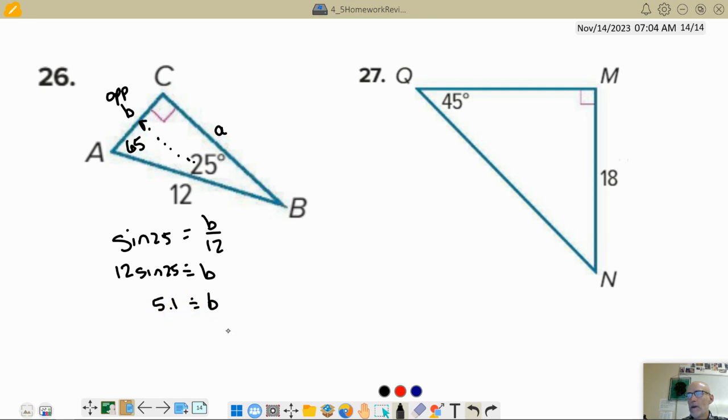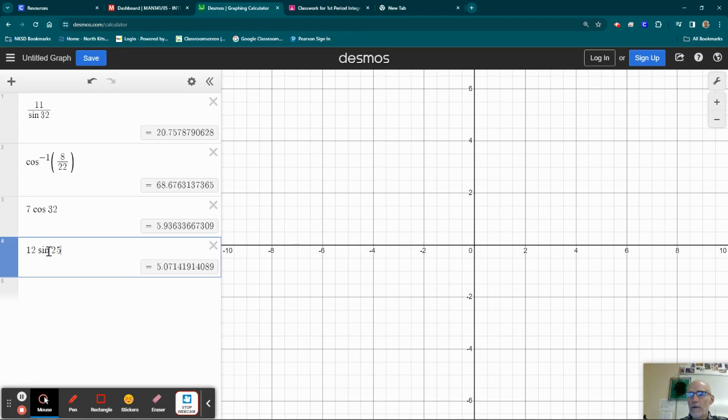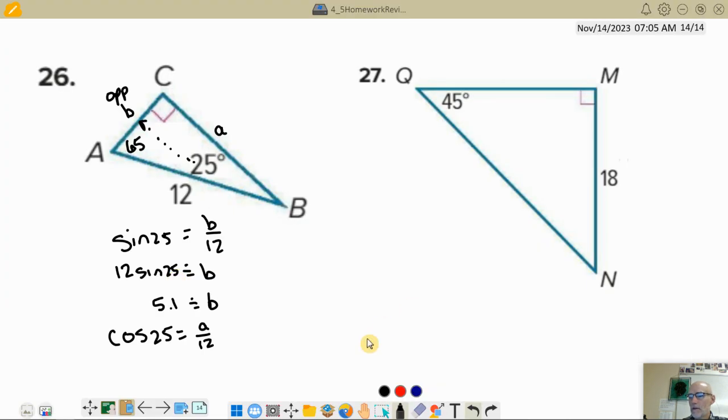And then my A value, I'm going to do cosine of 25 and say that's A over 12. And so I head back over and just change this to the cosine, and I've got 10.9. So let's put A equals 10.9.